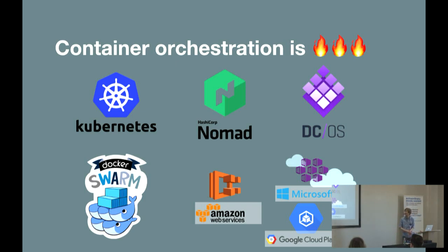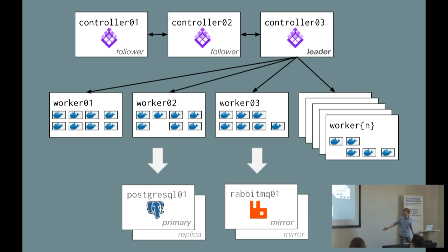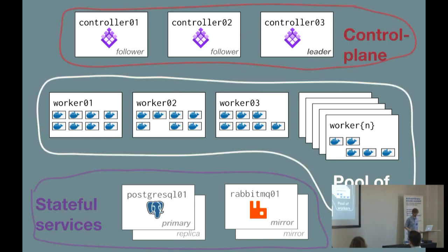Container orchestration is very fashionable. There are lots of different services you can use. Kubernetes is probably the one with the most momentum at the moment. HashiCorp has got Nomad, and there's Mesosphere DCOS, which is what we use in particular. Docker itself comes with a built-in container orchestration called Docker Swarm, and then all the cloud providers have their own options. We use the terminology controller and worker. The controllers basically tell the workers what to do, and you have this big pool of some number of workers. Stateful services sit outside because it is a little tricky to deploy stateful things in containers, and you take a performance hit for things like Postgres inside a container.